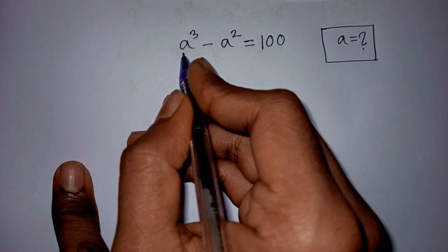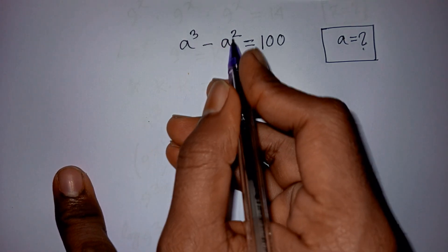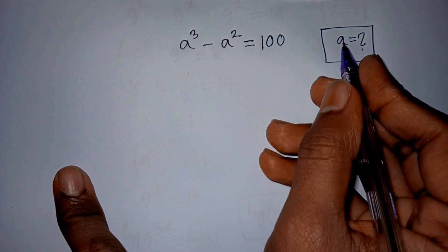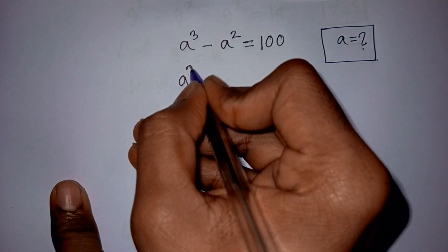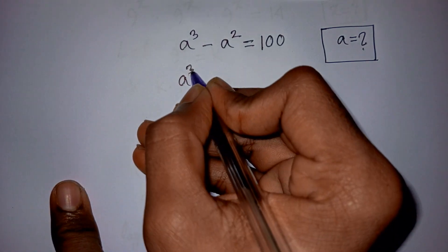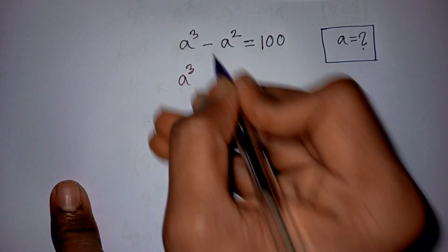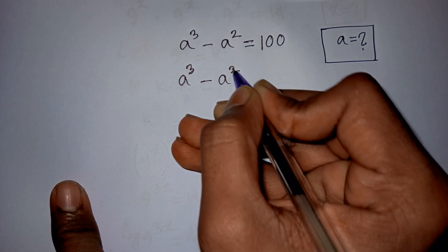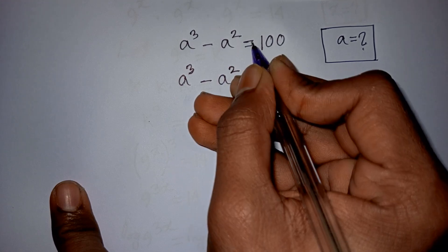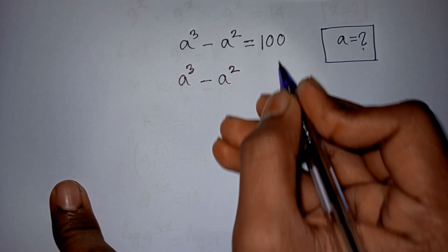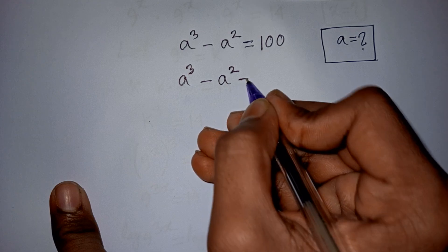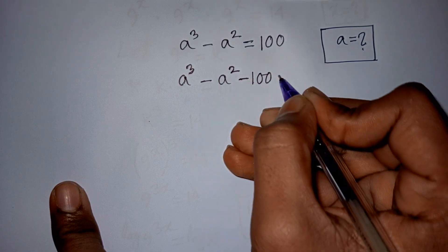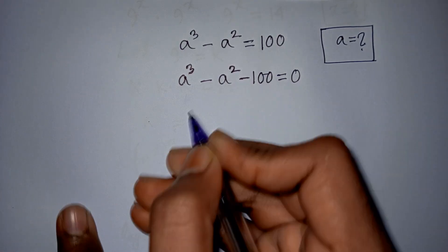How to solve a³ minus a² is equal to 100, find the value of a. We have a³ minus a², then take this plus 100 to the left side, so this will be minus 100 is equal to 0.